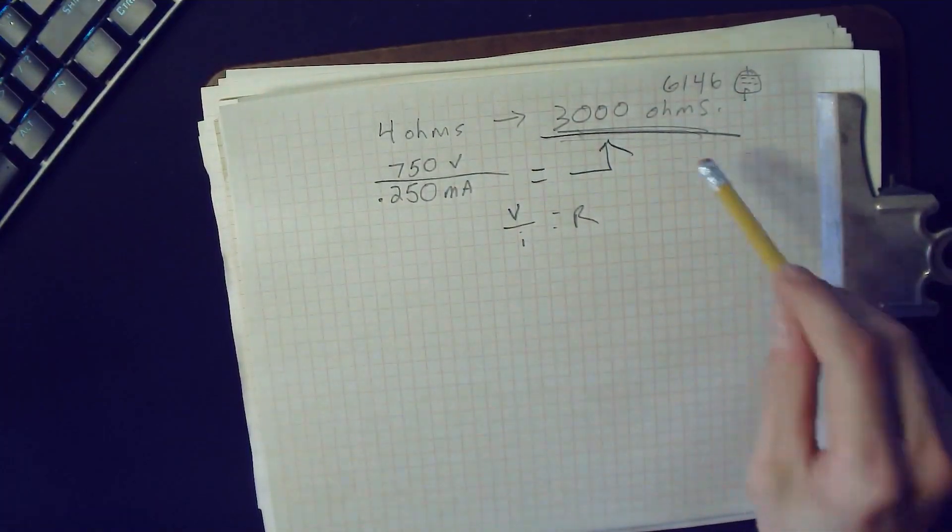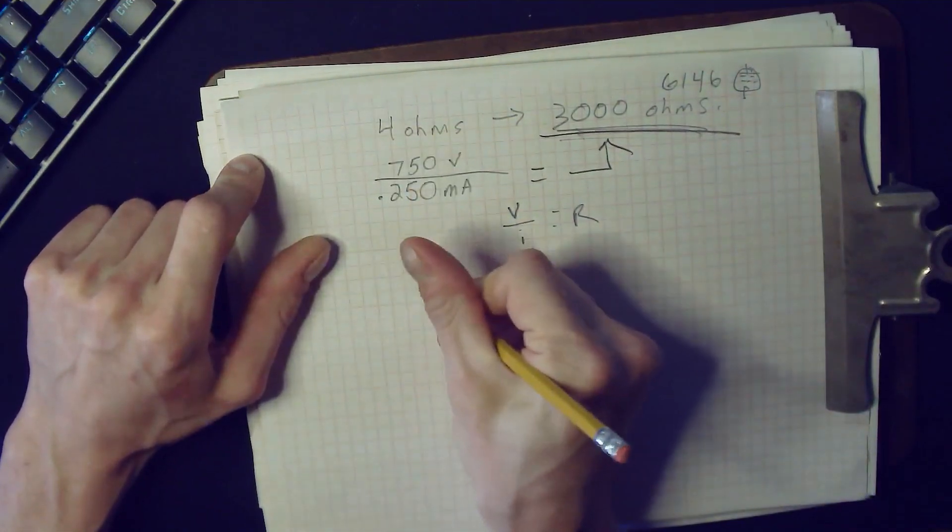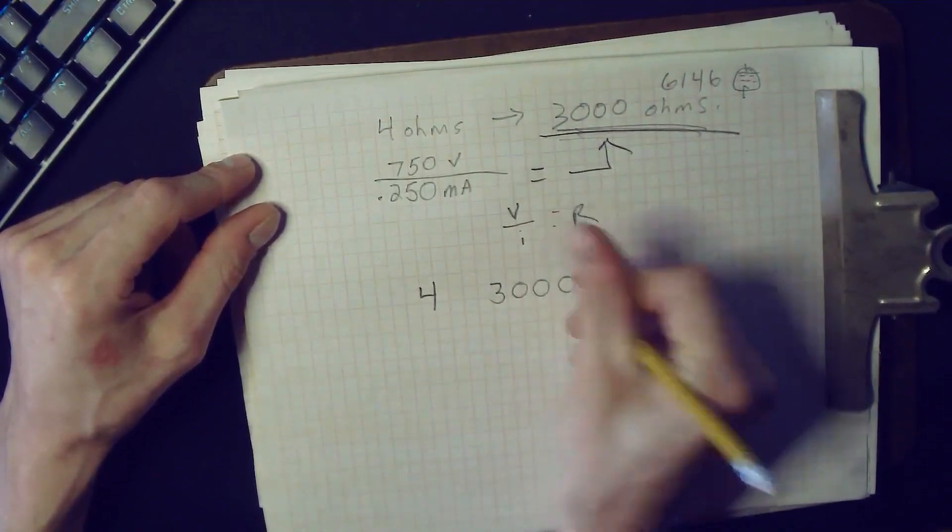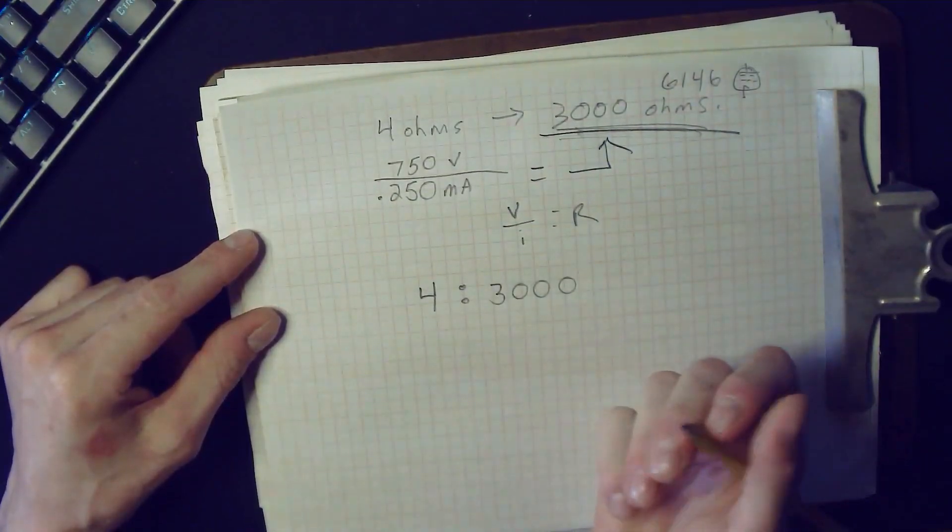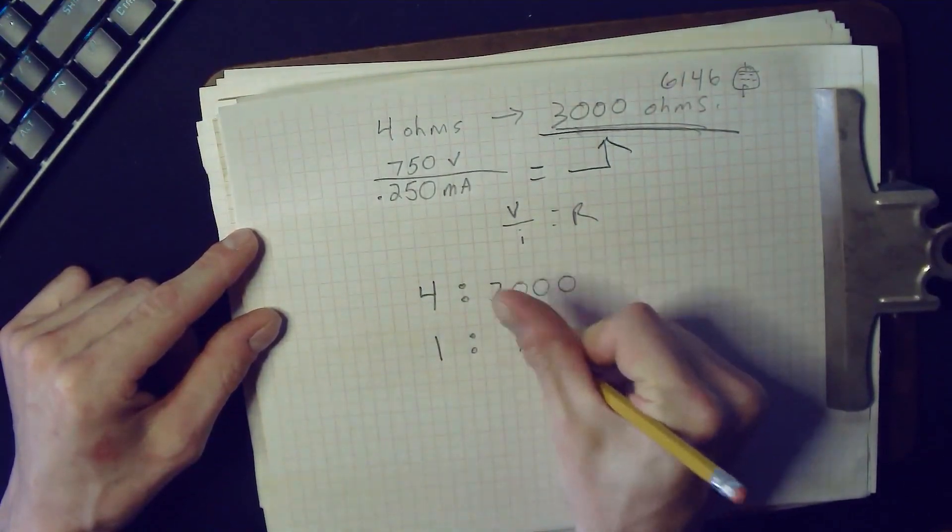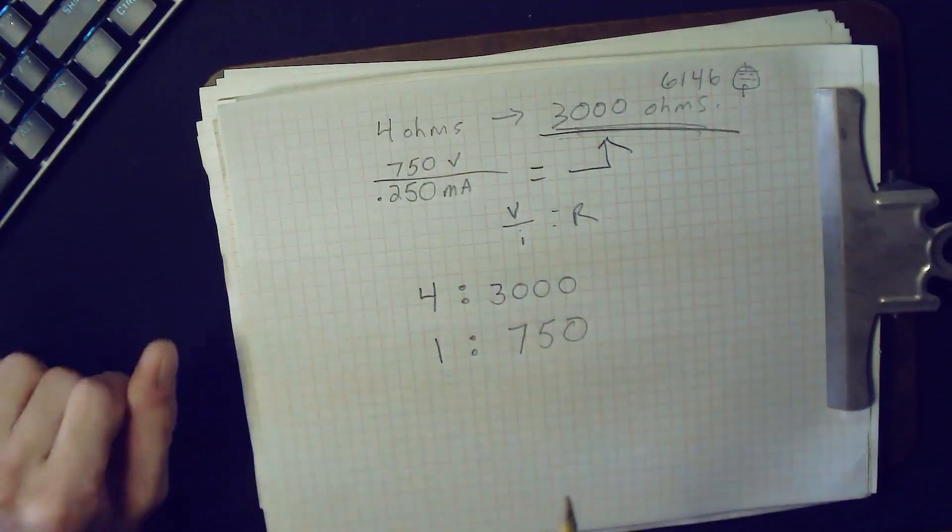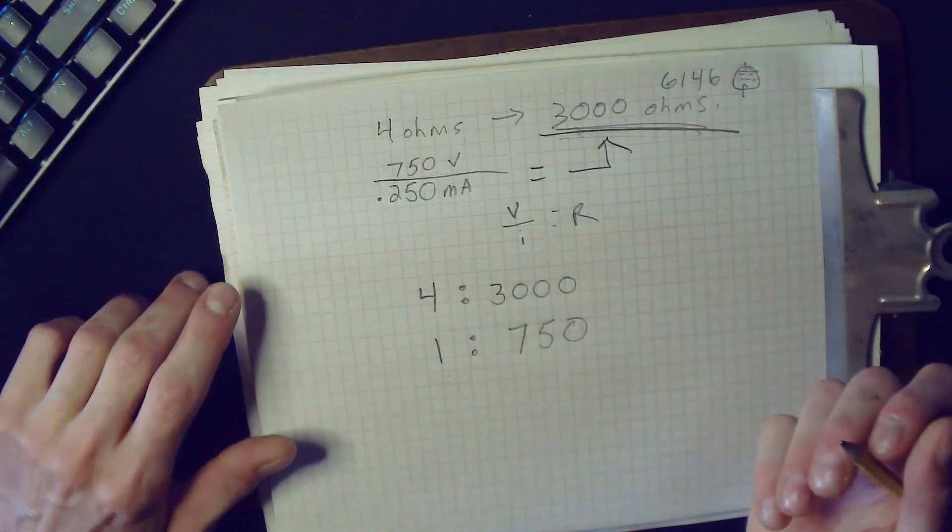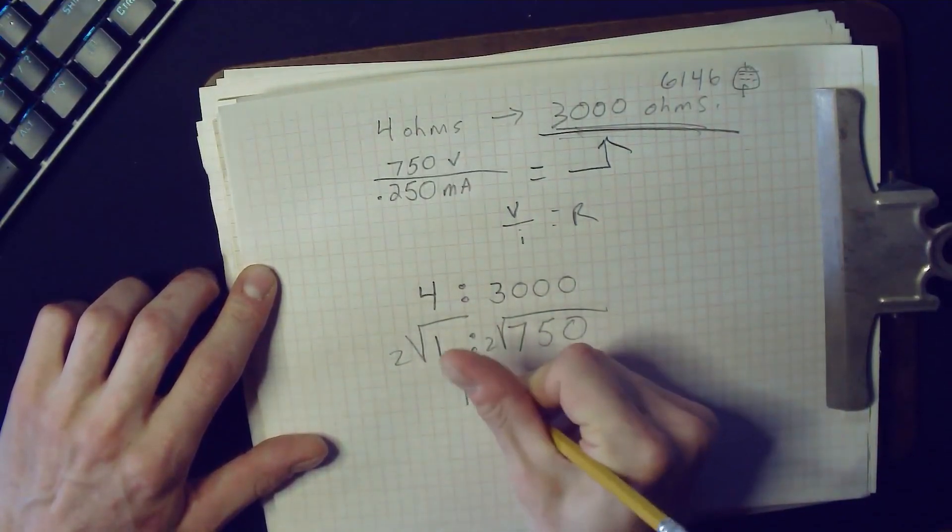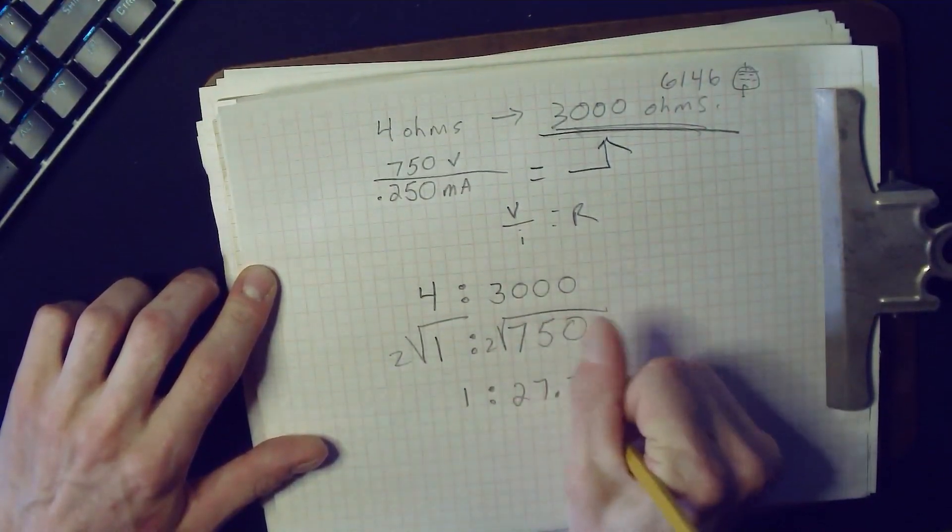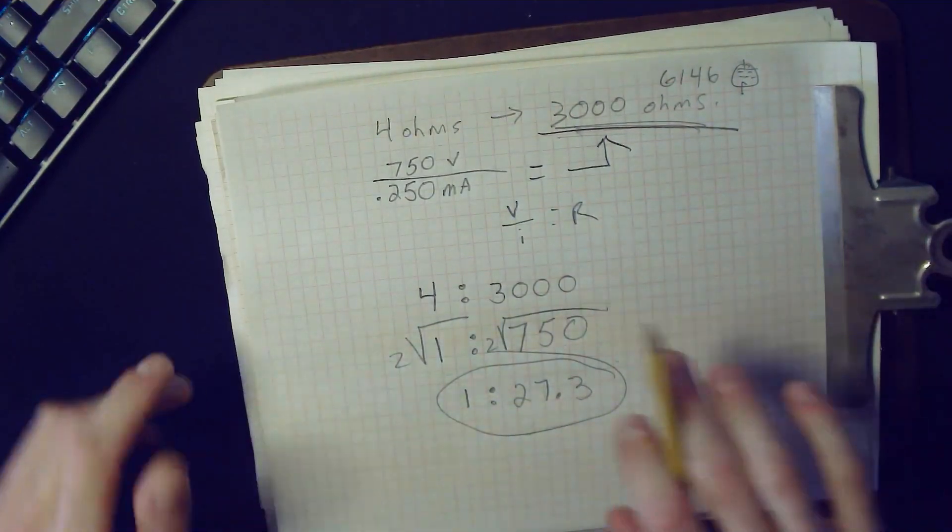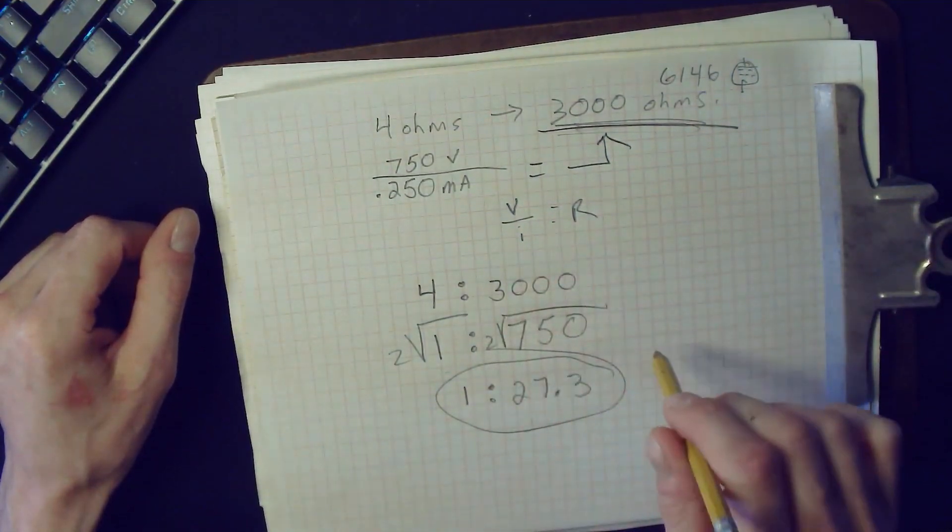With that information, we know that the output of the modulator is 4 ohms. The modulating impedance of the final is 3000 ohms. So we make that a ratio. We can simplify that: make this a 1, make this a 750. This is the modulation ratio. The way we find the turns ratio for our transformer is to simply take the square root of both sides, and that gives us 1 to 27.3. This is the turns ratio for our modulation transformer.